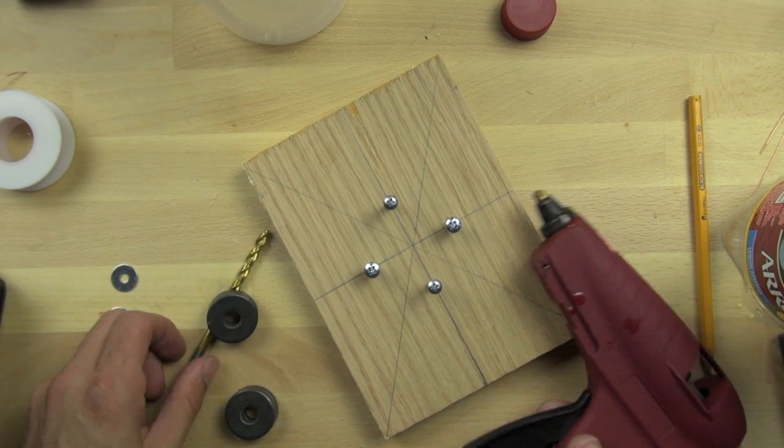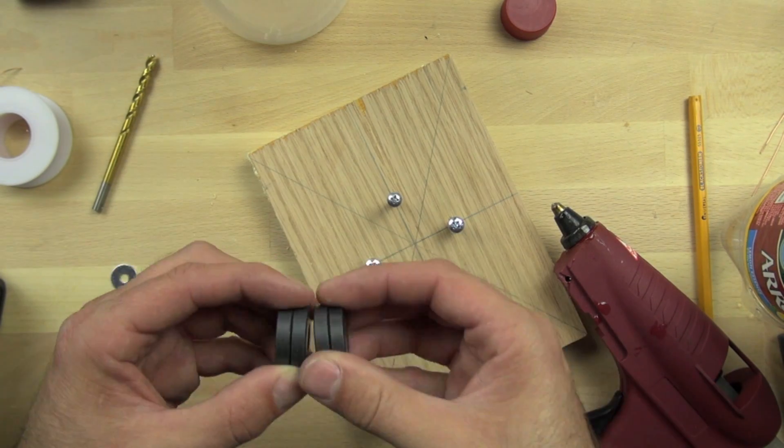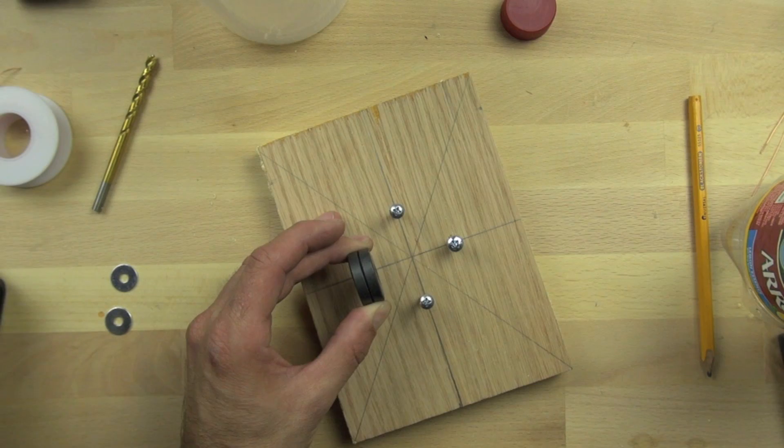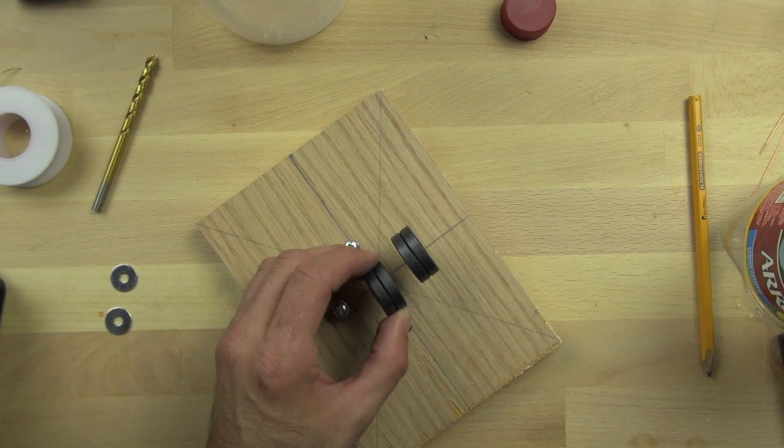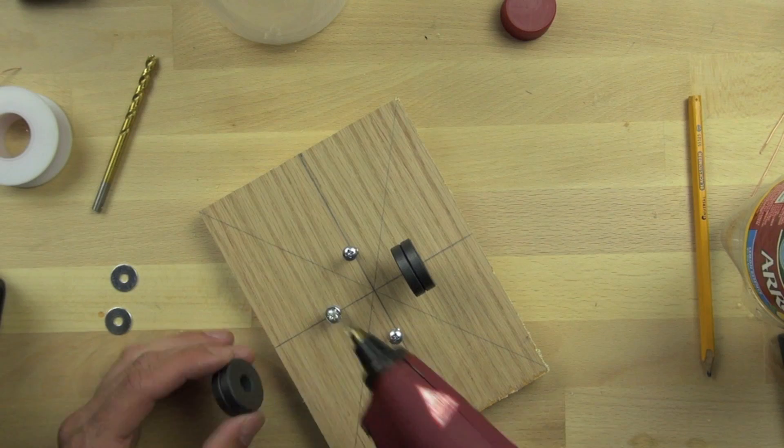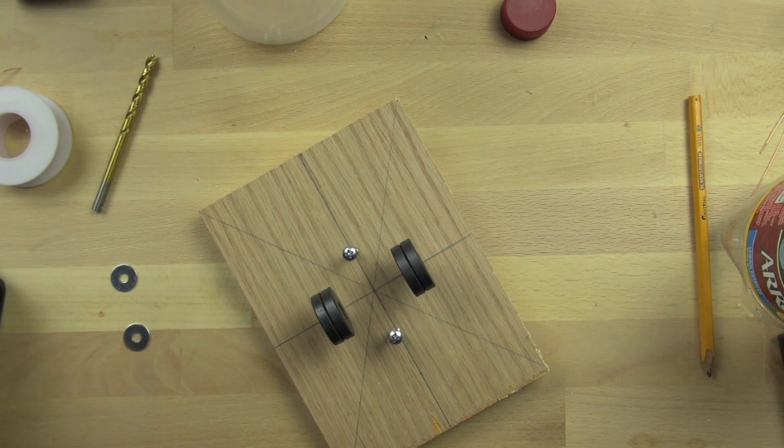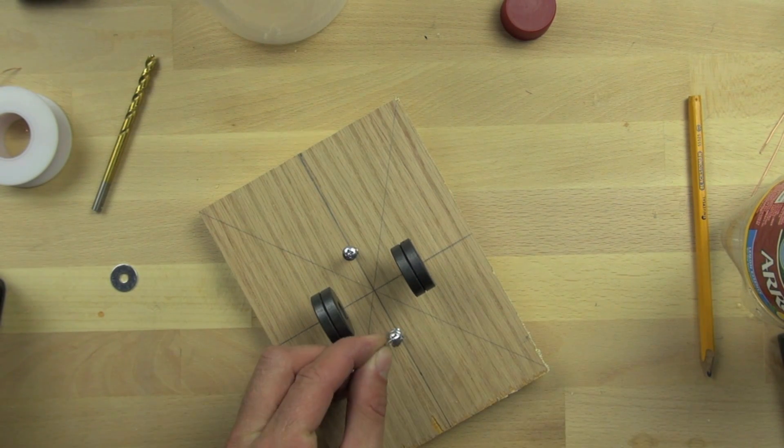And now we're going to take some hot glue and get our permanent magnets. Make sure that they are oriented so that they are attracted to one another. So we want their opposite poles facing one another. And so we just put some hot glue on the screw and then set the magnet in there. And the main reason we did it this way is that it's really easy to change the position of the magnets if we need to.